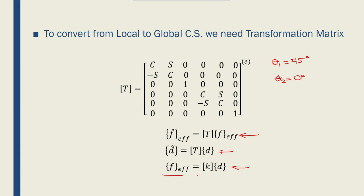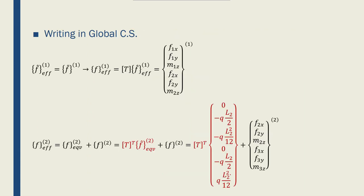This is the relationship we use to solve for the unknowns of the problem. For the effective nodal force of element 1, it is very simple — it is exactly the same as the local nodal forces. So the global effective nodal force for element 1 equals T, the transformation matrix for element 1, times the effective nodal force vector for element 1 in the local coordinate system, giving us the global forces for element 1.